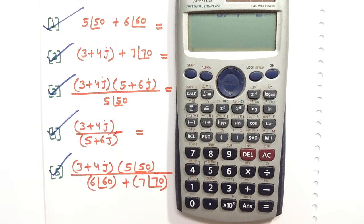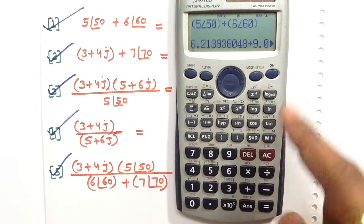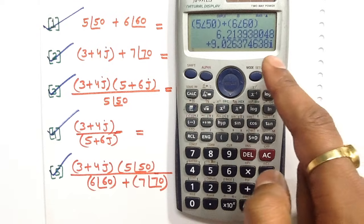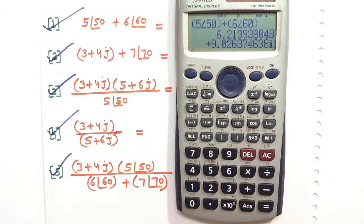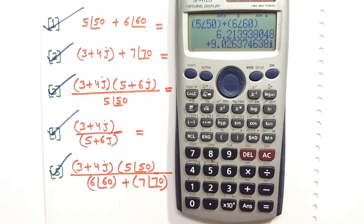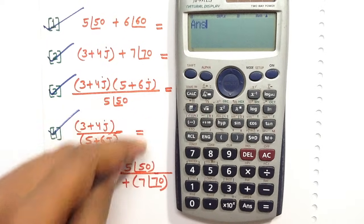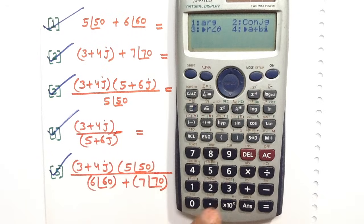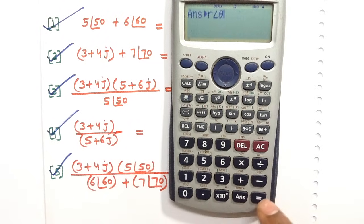If you press the equals button, you will by default get the answer in rectangular form. Press SD to get the complete solution on screen. The answer of question number one in rectangular form is 6.21 plus 9.02j. In electrical engineering we write j, but in the calculator we use i (Iota). To convert the answer to polar form, press Answer, then Shift, then 2, then 3.